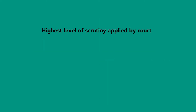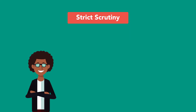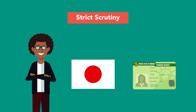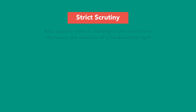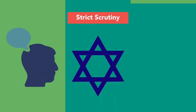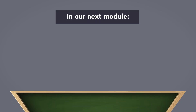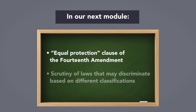The highest level of scrutiny applied by courts is strict scrutiny. Strict scrutiny is applied to laws or government actions that discriminate based on race, national origin, and citizenship status — though the last applies only when the distinction is carried out by a state government rather than the federal government. Strict scrutiny is also applied when a challenged law restricts or threatens the exercise of a fundamental right such as freedom of speech, religion, or the right to vote. In our next module, we'll learn about the Equal Protection Clause in the 14th Amendment and continue our study of scrutiny of laws that may discriminate based on different classifications.